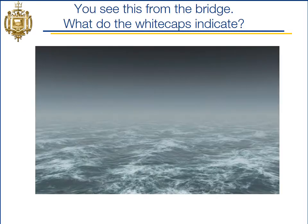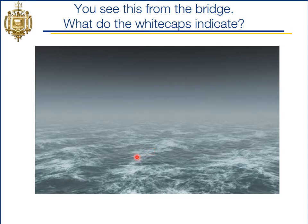If you see white caps in the ocean, that happens when we exceed the wave height to wavelength ratio of one to seven — the waves become extremely steep. When that happens, the wind blows the tip of the waves off, and that's what becomes the white water, the white caps that you see. So these are steep waves.